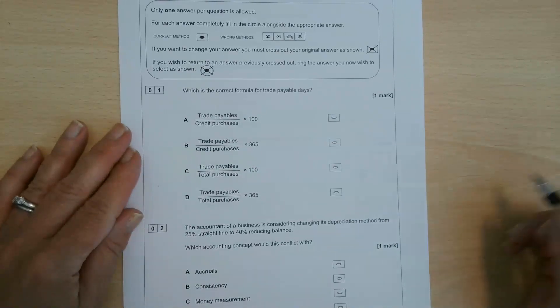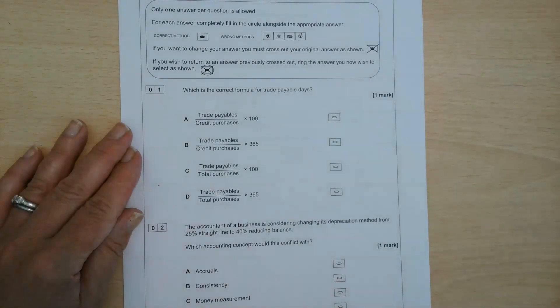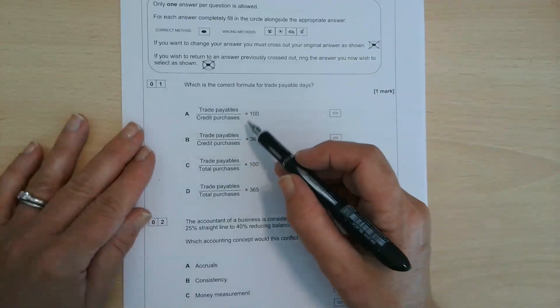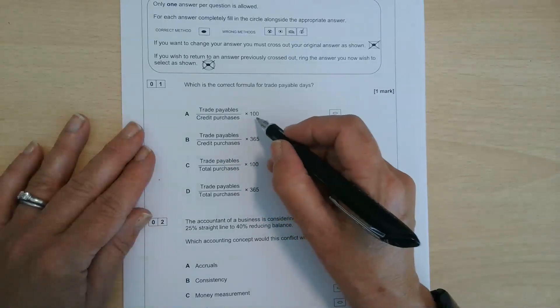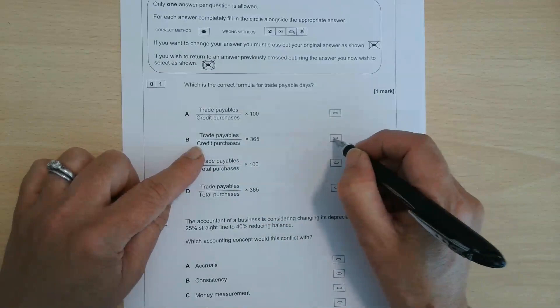So a quick video on the 2021 paper one multiple choice questions. First question then, what is the correct formula for trade payables days? So it's trade payables over credit purchases, not times 100, remember that's a percent. Trade payables over credit purchases times 365, the answer is B.